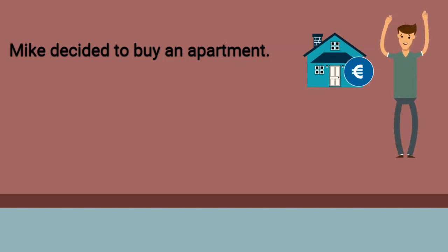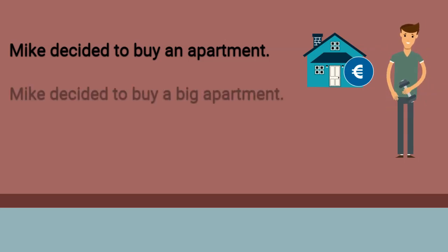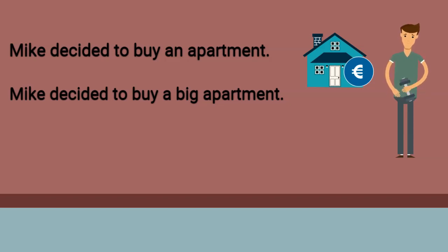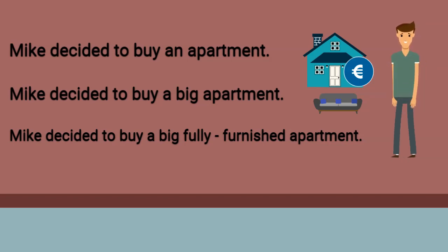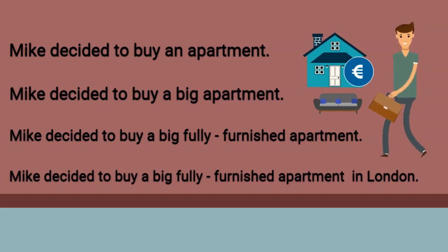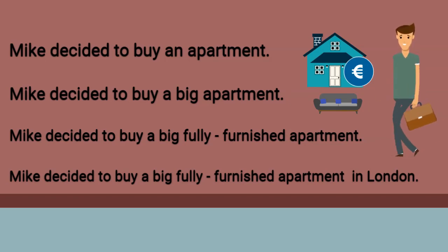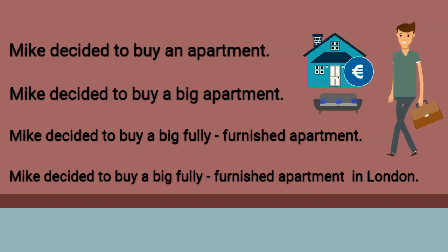We can start from 'Mike decided to buy an apartment,' and then add just one more word: 'Mike decided to buy a big apartment.' Then you add another: 'Mike decided to buy a big, fully furnished apartment.' It's also possible to add place information: 'Mike decided to buy a big, fully furnished apartment in London.' You can keep extending this sentence, showing creativity in our daily lives — and this happens in all languages around the world.